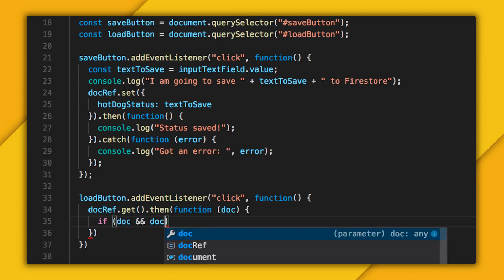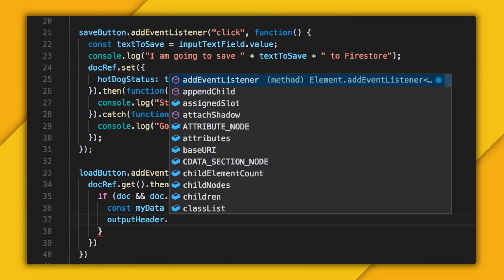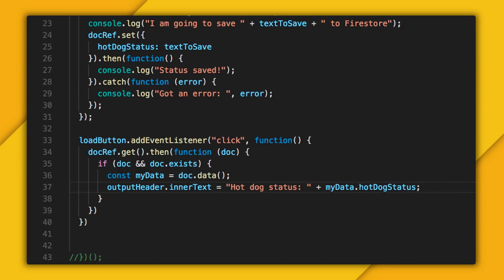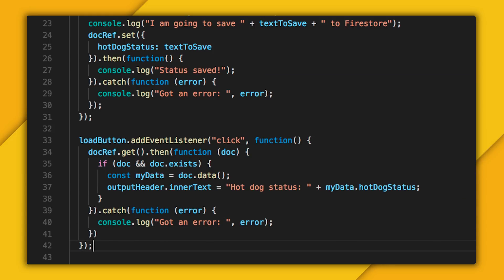So we'll see if this snapshot exists. And if it does, we will call data to extract the contents of that document as an object. And then I can set the text of our big output header to mydata.hotdogstatus. And as long as we're here, let's add a catch at the end to catch any errors that might come up. So let's run this.